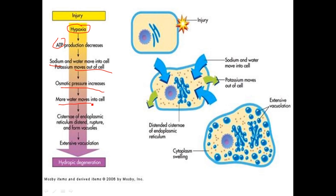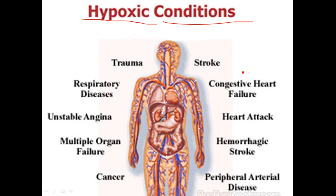More water moves into the cell, the cisternae of the endoplasmic reticulum become distended and rupture, forming vesicles and causing extensive vacuolation. This leads to hydropic degeneration.